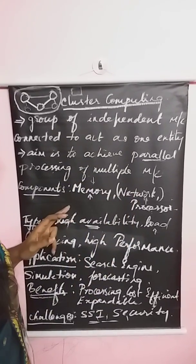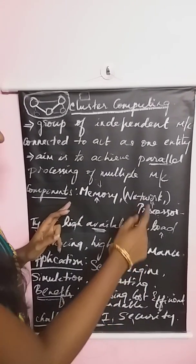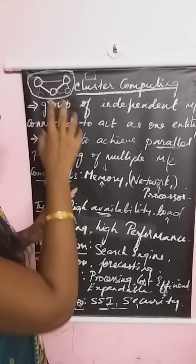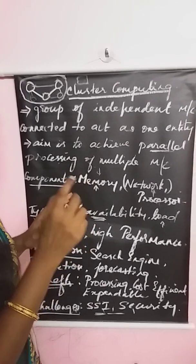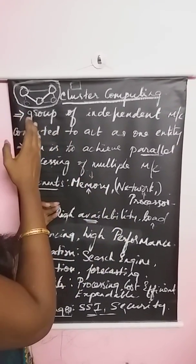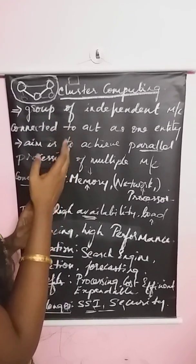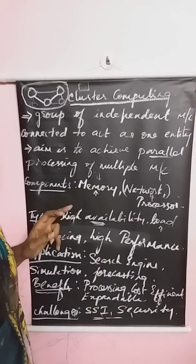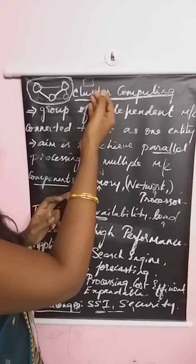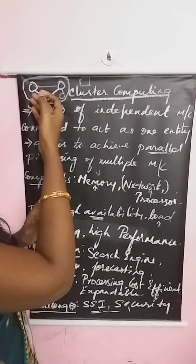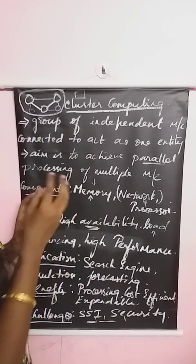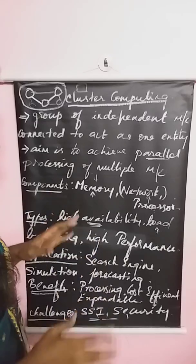The next most important component is network. Since different independent machines are connected together, the connectivity has to be proper. Simply put: better the connectivity, better the performance of the cluster. The next component is the processor. Since a high computational task is split and assigned to different machines, the processor of each machine should work efficiently and the output of every node has to be efficient.